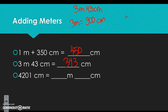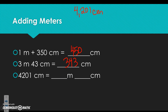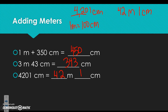And finally, if I have 4,201 centimeters — since 1 meter equals 100 centimeters, I look at the hundreds: 42 is in the hundreds place, so that's 42 meters plus 1 more centimeter, giving 4,201 centimeters.